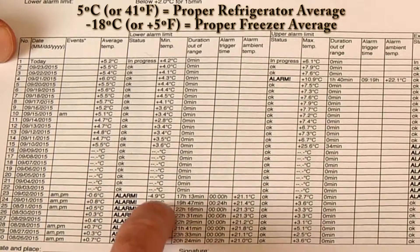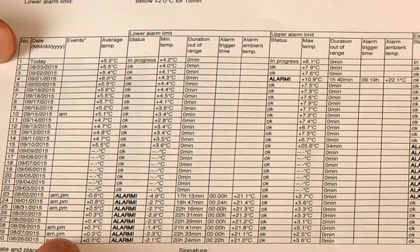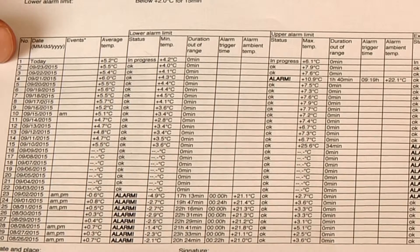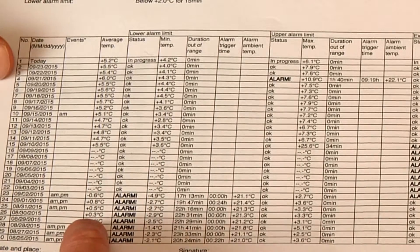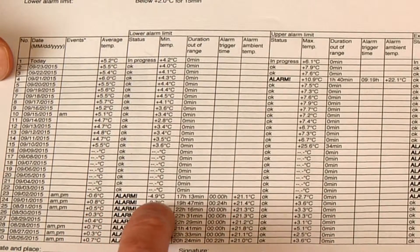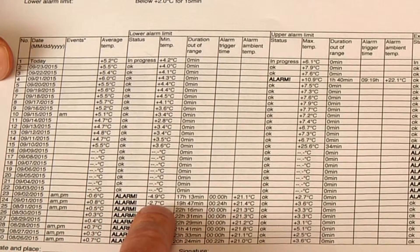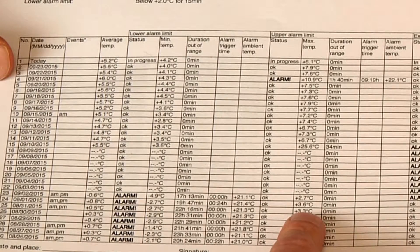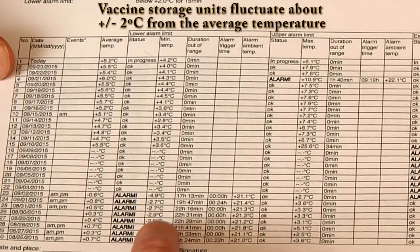You can see earlier in the month in this unit, average temperatures were 0.5 and 0.4 — too low — resulting in low temperature alarms below 0 degrees C. However, when we look at the highest temperatures on those days, they're fairly close to the lowest temperature readings.